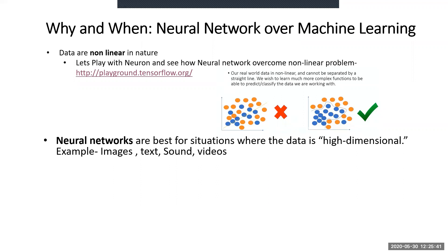Another reason to use neural networks is when the data is high-dimensional — like images, text, sound, and videos. In scenarios where you need to classify images, caption videos, or analyze text, neural networks work much better than traditional machine learning, or in fact only neural networks can work.